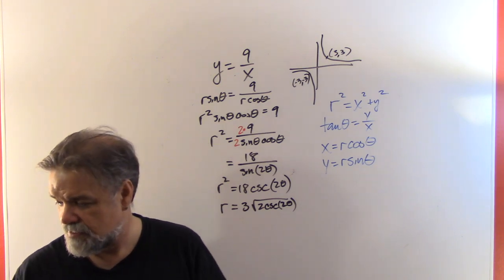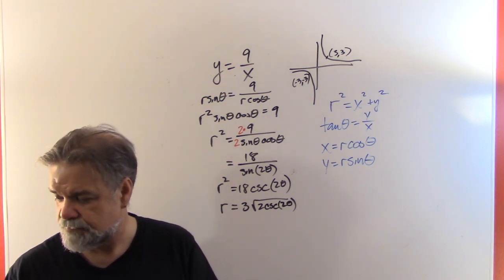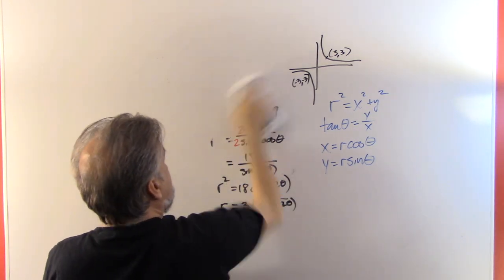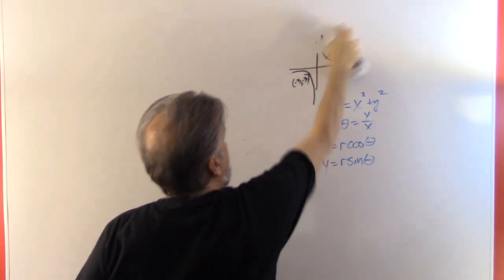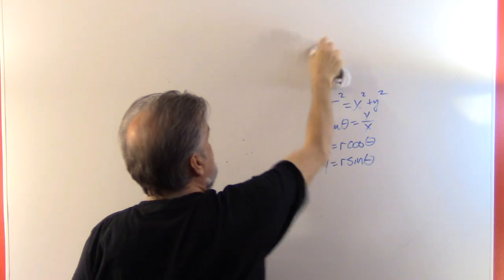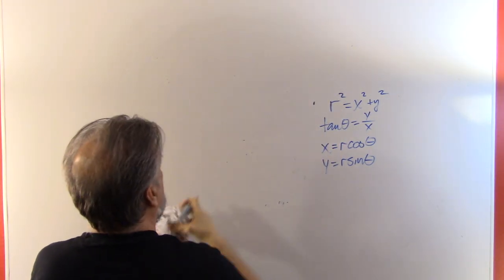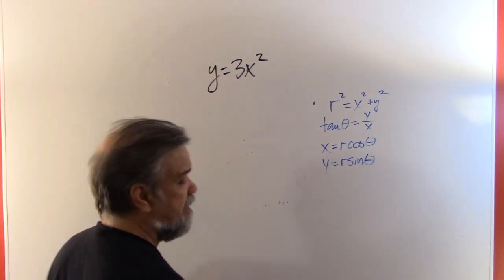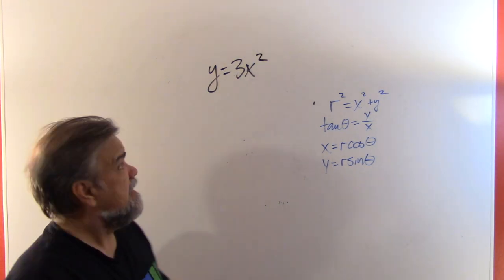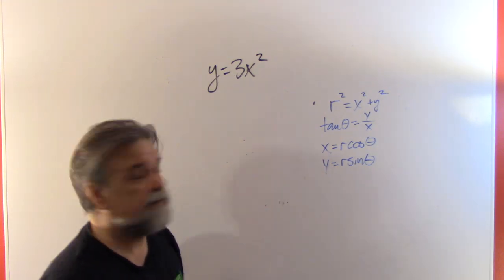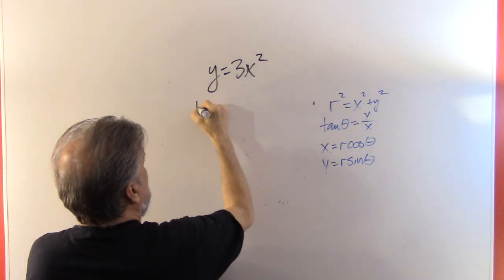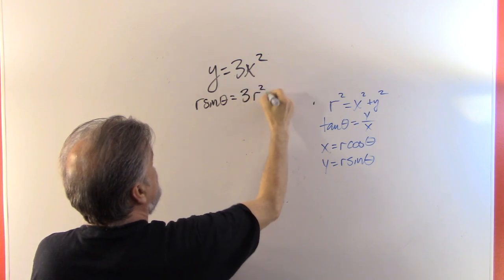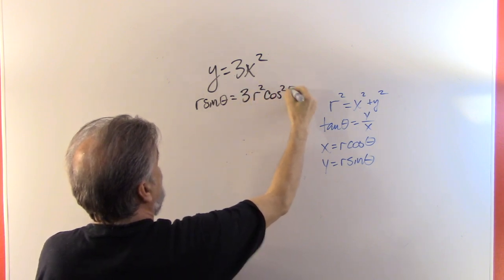Let's do another one. Let's do one more and let's do a parabola. This one is y equals three x squared.